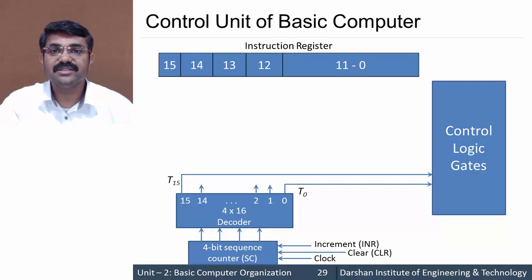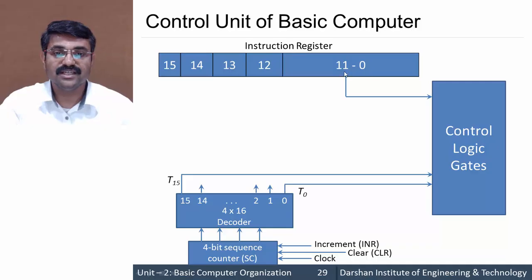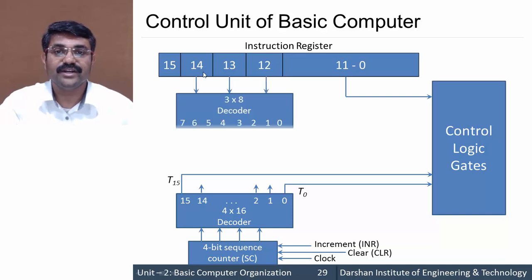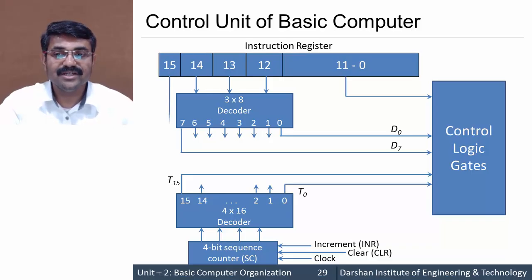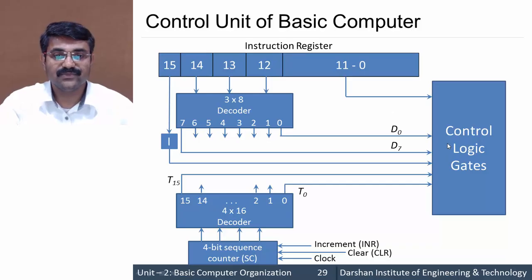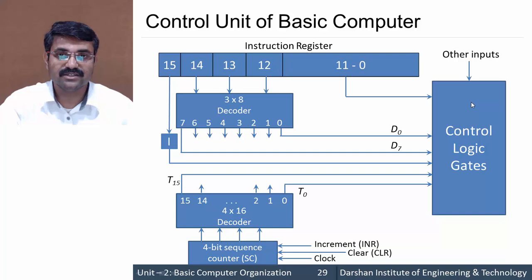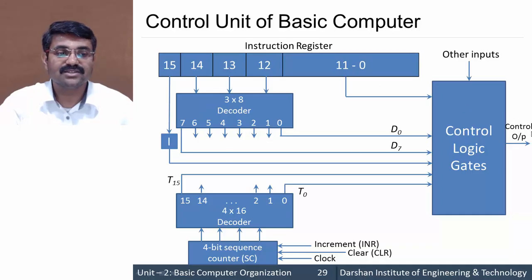During this control organization, bits 0 to 11 of the instruction register are directly given to the control logic gates. Bits 12 to 14 are decoded — they are given to a 3-to-8 decoder which generates outputs D0 to D7 based on the inputs. The 15th bit, the I-bit, is also directly given to the control logic gates. There are certain other inputs given to the control logic gates as well, and the resulting output is the control output. This is the control unit of a basic computer.